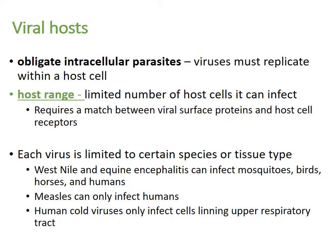The host range is the different kinds of cells a virus can infect. Normally it's a limited number because they require a match between viral surface proteins and host cell surface proteins. Each virus is limited to a certain species or even a certain tissue type. West Nile and equine encephalitis can infect mosquitoes, birds, horses, and humans. Measles can only infect humans. Human cold viruses can only infect cells lining the upper respiratory tract.